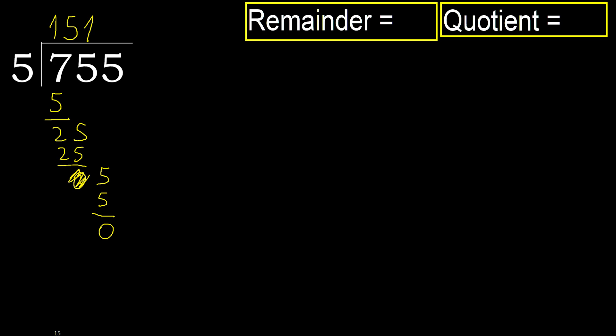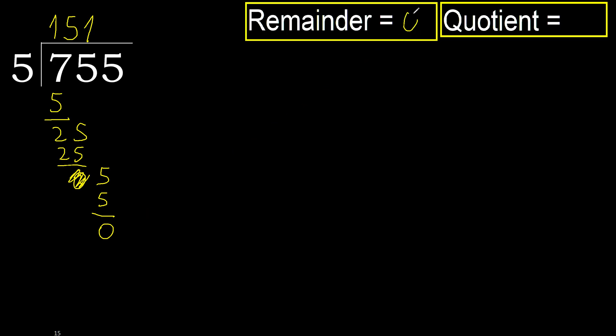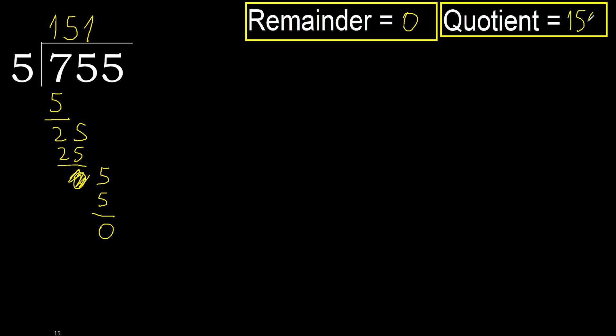That is not a number, therefore finish it. 755 divided by 5 is 151.